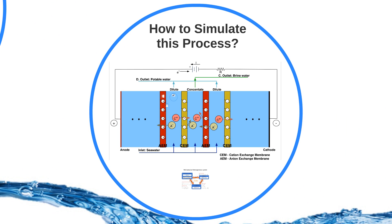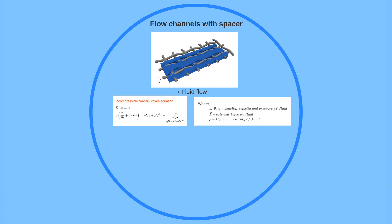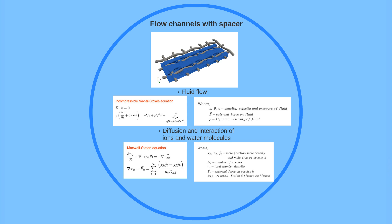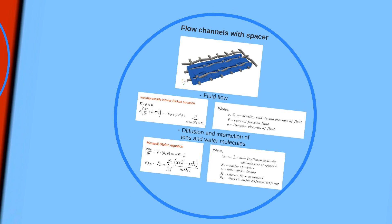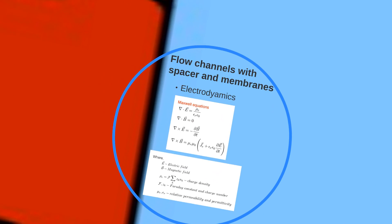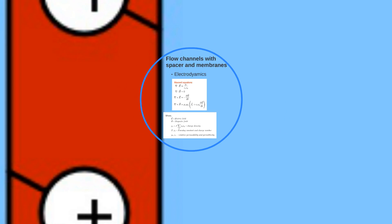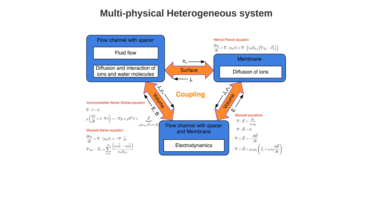To simulate this process, first we need to identify different physics involved. In flow channel with spacer, the incompressible Navier-Stokes equation describes the fluid flow. The Maxwell-Stefan equation describes the self-diffusion and the interaction of ions and water molecules. In membrane, the Nernst-Planck equation describes the diffusion of ions. In entire domain, the electrodynamics are modeled by Maxwell equations. Finally, all these different physics are coupled with each other to enable fully coupled simulation.